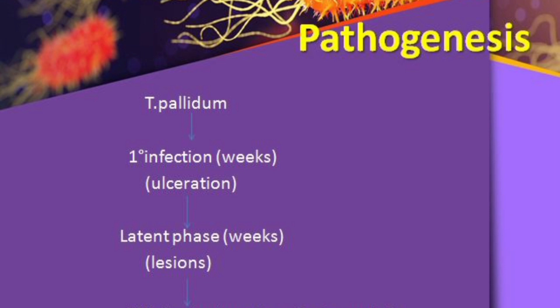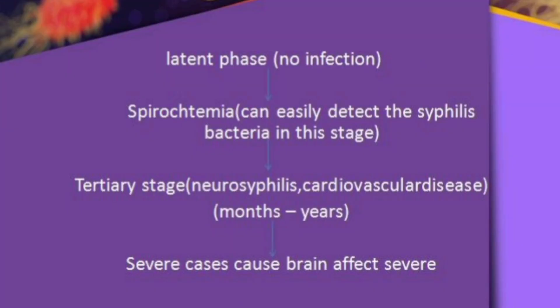Again there is no pain, and this will resolve. Then you move back to the latent phase, and secondary infection recurs — this cycle of latent phase to secondary infection keeps repeating. Then you reach spirochetemia, where the bacteria can be detected in your blood, and a blood test will show a positive result.